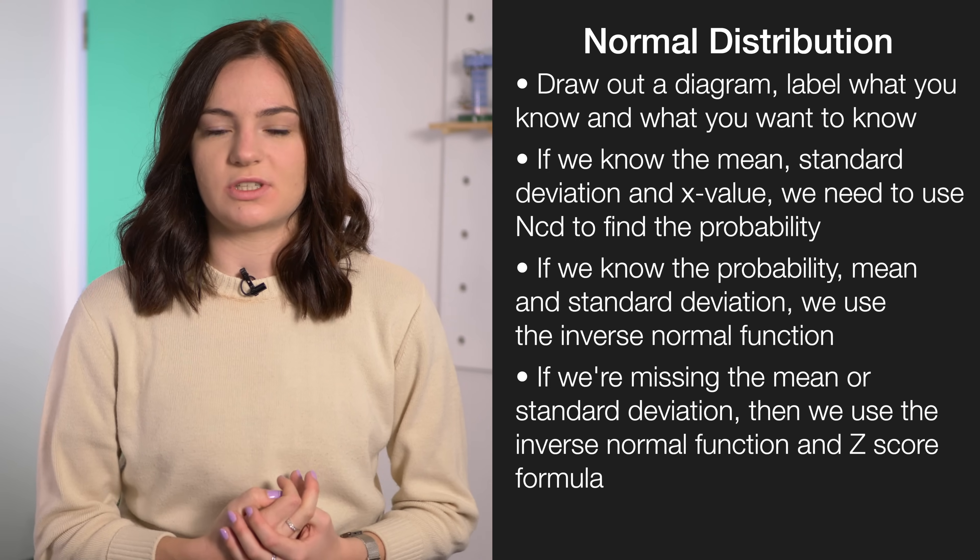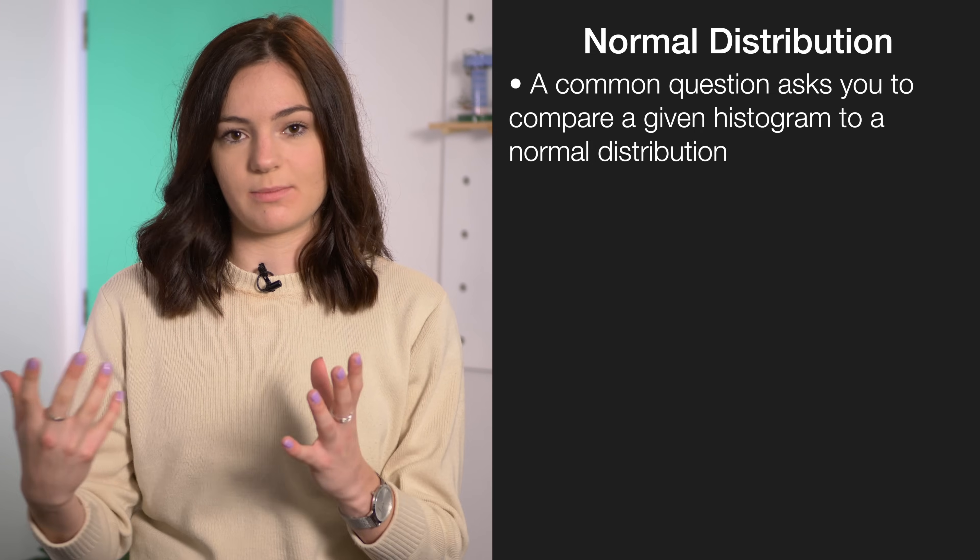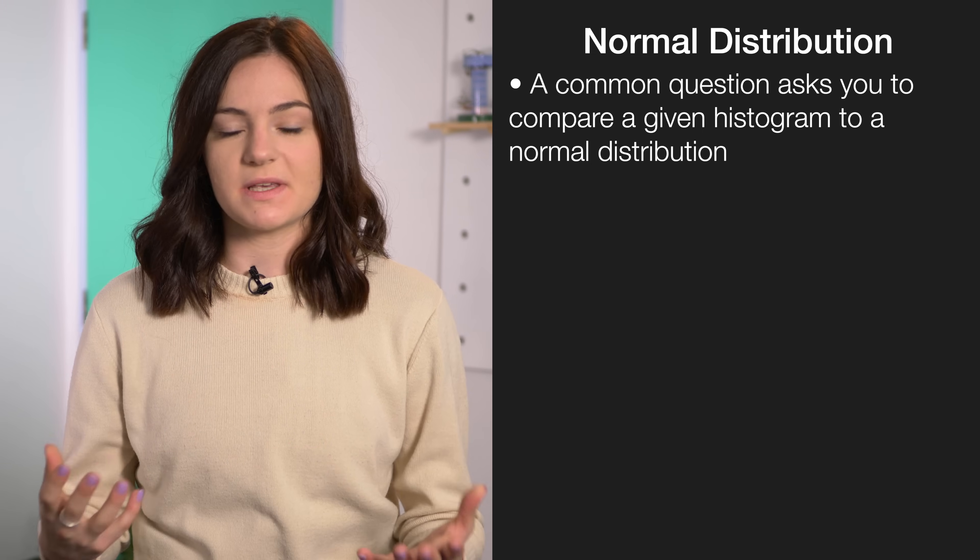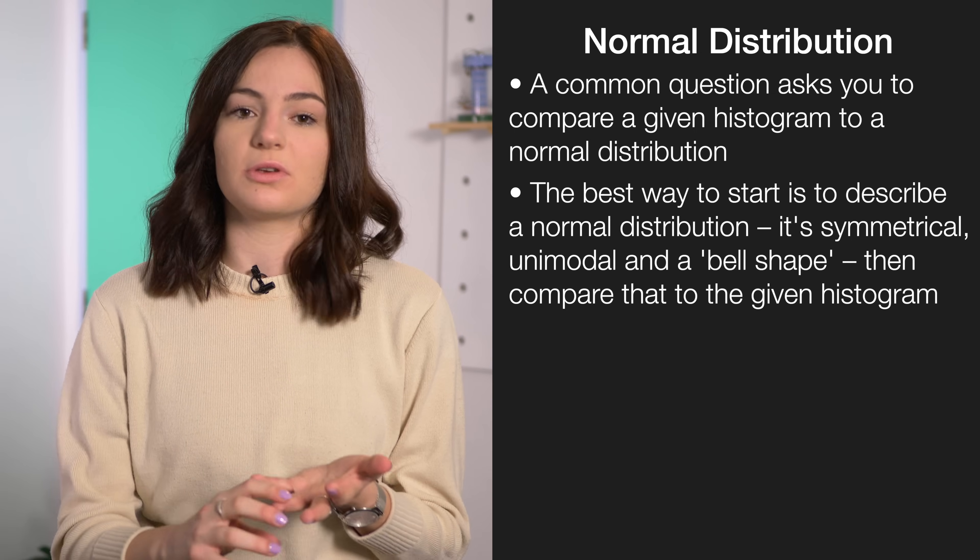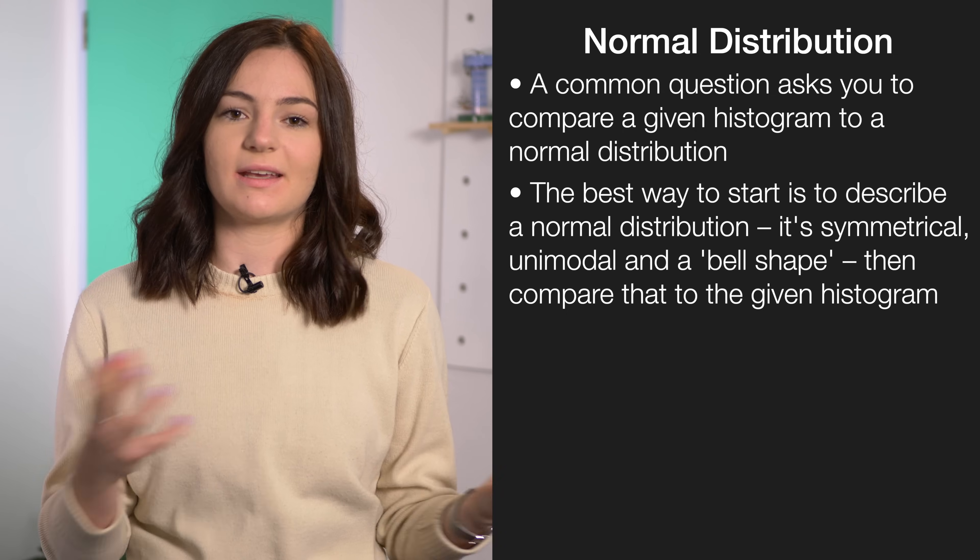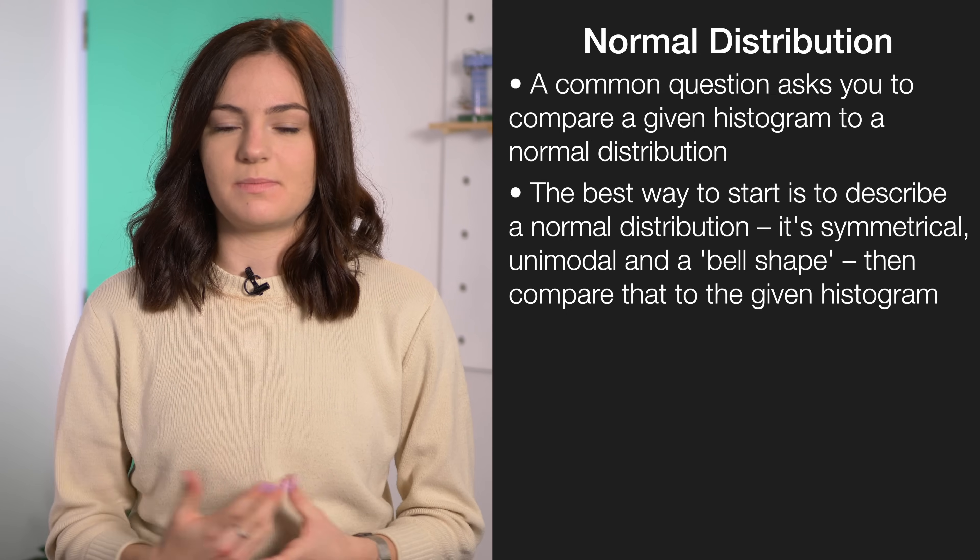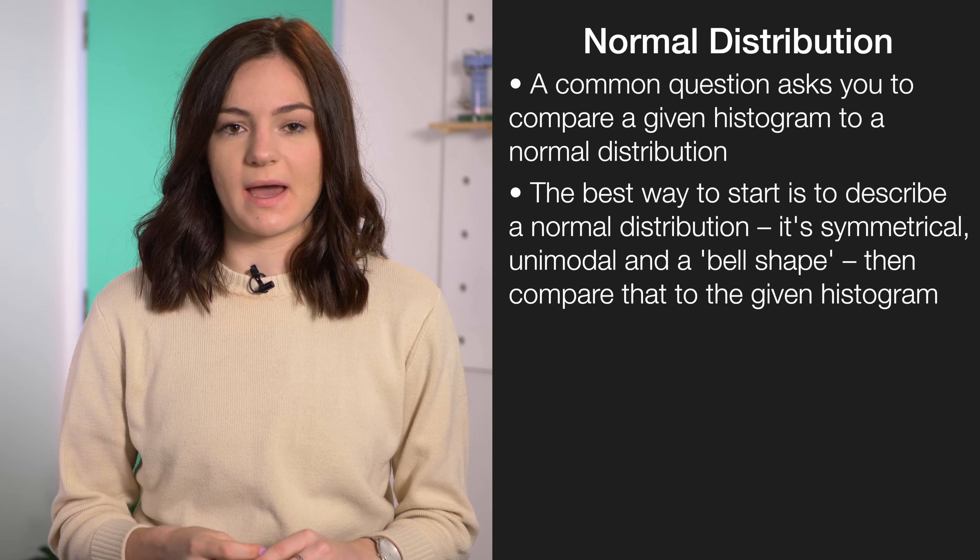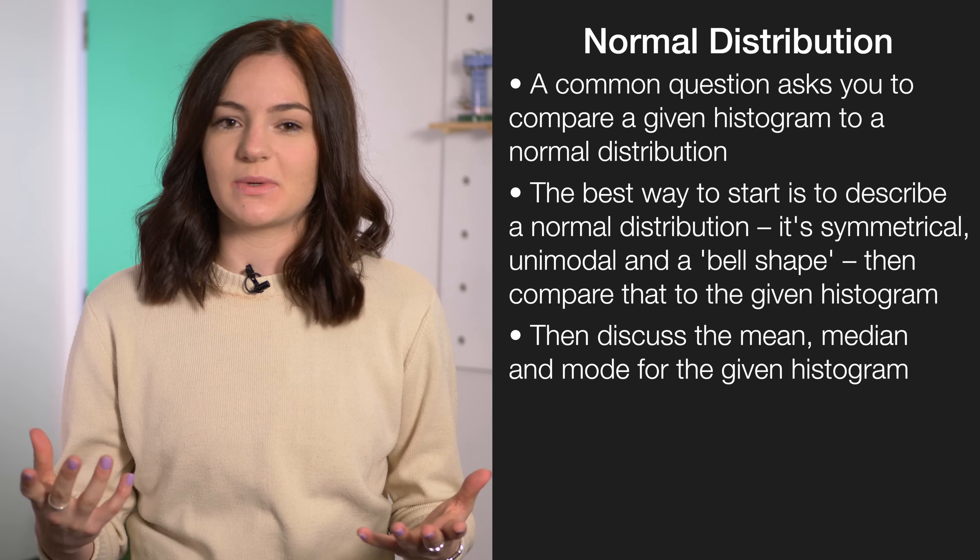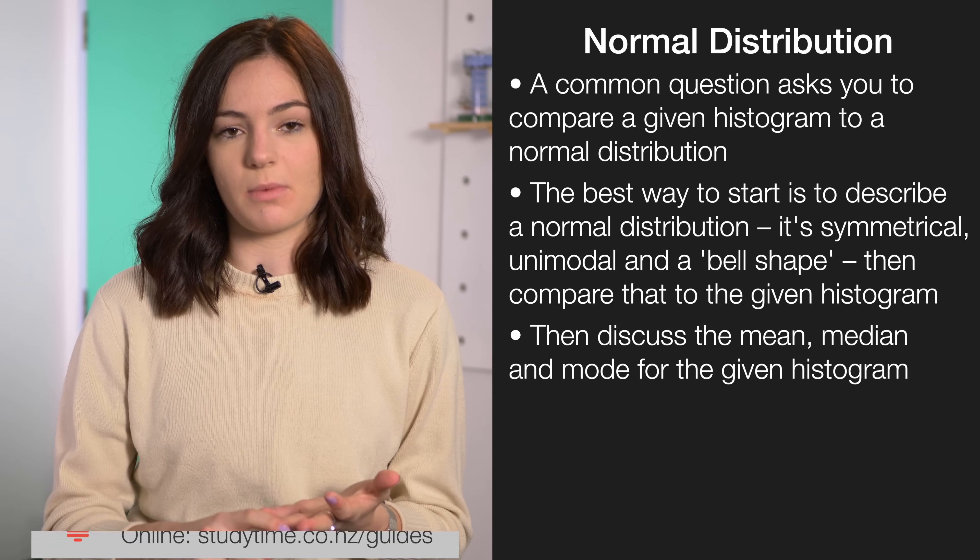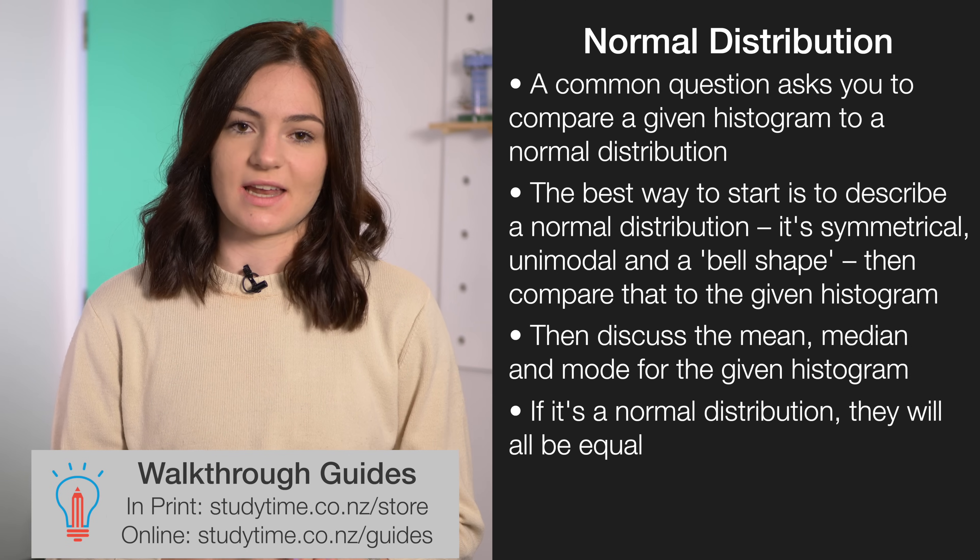Another typical question that you'll get with normal distributions is you'll get a histogram, and they'll ask you to determine whether this resembles a normal distribution or not. The best way to start this is to describe what a normal distribution is. So it's symmetrical, unimodal, and a bell shape, and then compare that to the histogram that you're given. If you want to get extra marks, the best way for you to do that is to then talk about what the mean, the mode, and the median is of that histogram. As we know, for a normal distribution, the mean, the mode, and the median are all going to be equal. For more information on how to do this, check out the study time guides.